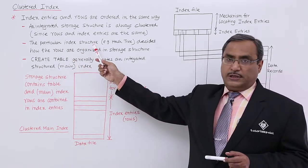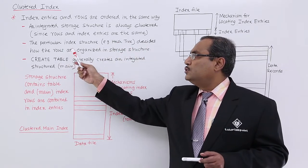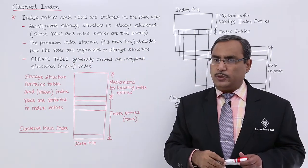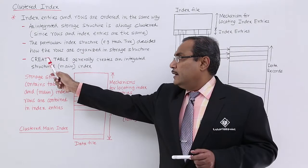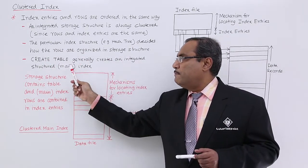The particular index structure, for example a hash tree, decides how the rows are organized in the storage structure. Create table generally creates an integrated structured main index.